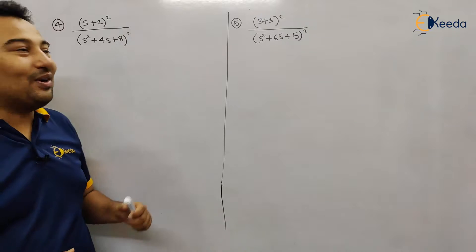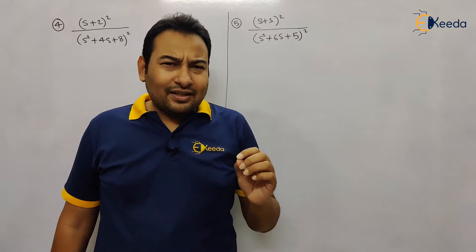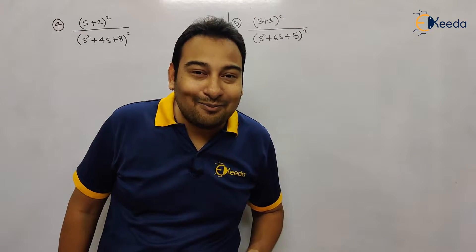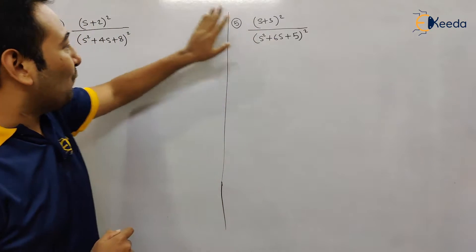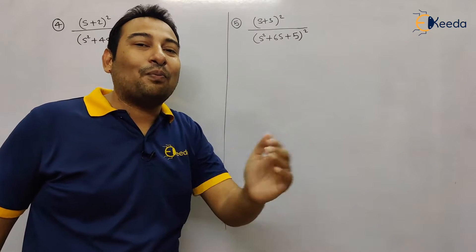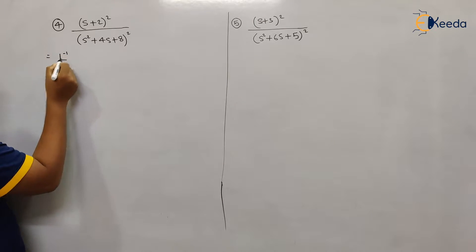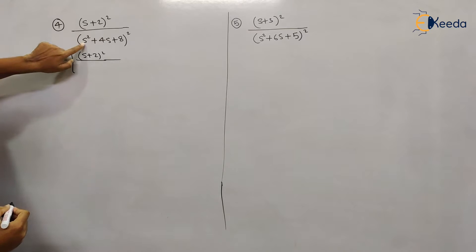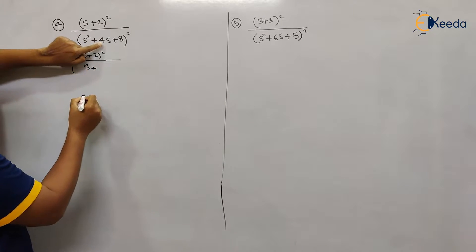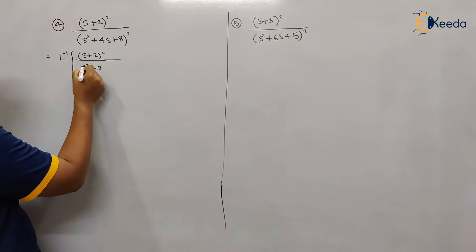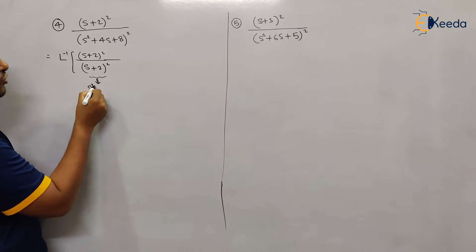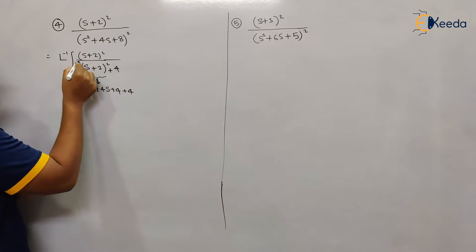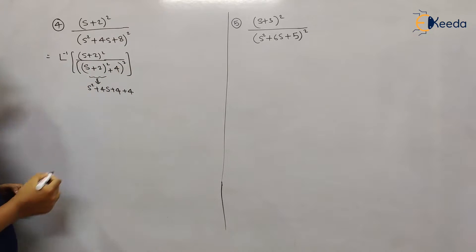Problem number four is (s + 2) upon (s² + 4s + 8) the whole square. Remember the note we discussed in type number one: whenever we get a quadratic equation in the denominator, we do a perfect square. Here we take the square root — half of 4 divided by 2 is 2 — so (s + 2)² gives s² + 4s + 4, but we need 8, so we adjust by adding 4, making it (s + 2)² + 4.